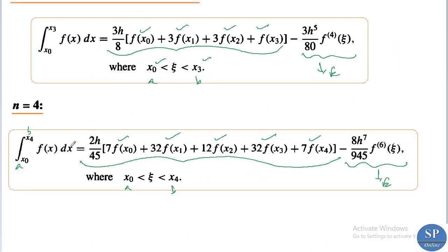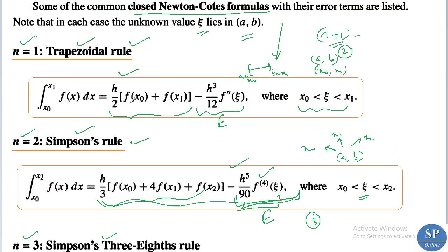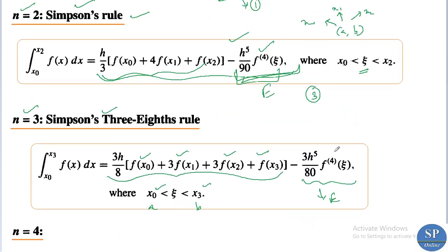When n = 4 (even), the error term contains the sixth derivative, so the precision is 5, which is n+1. For odd n: when n = 1, the trapezoidal rule error term contains the second derivative, so the degree of precision is 1, which equals n. When n = 3, the error term contains the fourth derivative, so the degree of precision is 3, which equals n. Thus, when n is odd, the degree of precision is n itself.